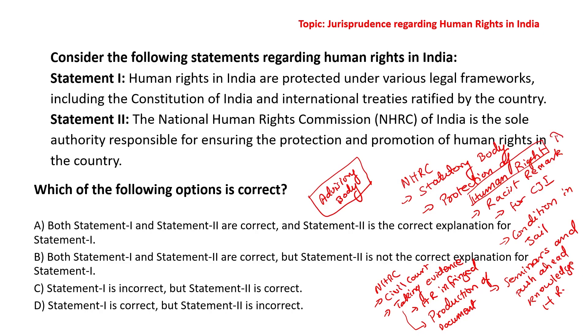The National Human Rights Commission also enjoys powers of a civil court when it comes to taking evidence with respect to any matter where human rights are infringed. Taking evidence also includes production of documents or enforcing attendance of a witness. Remember though that it is an advisory body — it cannot pass orders as such. It also provides advice on how protection of human rights could be improved in India. The report of the NHRC is annually presented to the President of India, who then lays the report before both houses of Parliament.